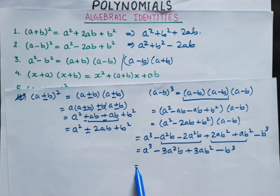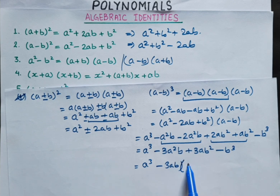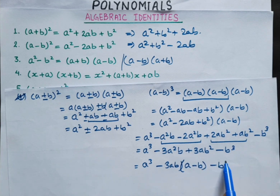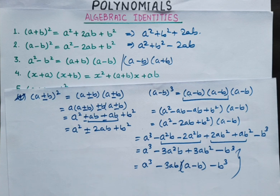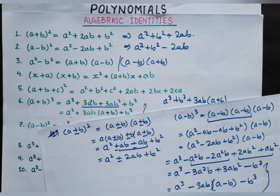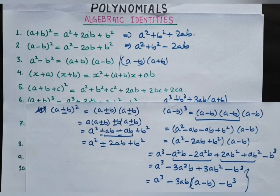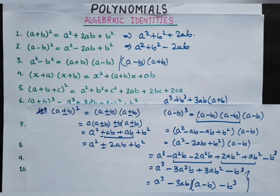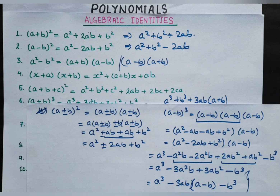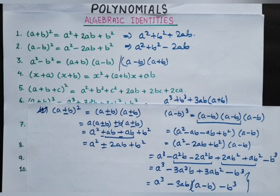Again, we can do common factoring: a cubed minus 3ab common, with a minus sign change, gives identity number 7. In the same way, we can verify all the algebraic expressions. But we are not going to verify all of them because we are going to use these algebraic expressions to solve various questions — and that is in our next class. So in our next class, we are going to solve Exercise 2.5, which uses algebraic identities. So till then, keep practicing. Thank you very much.